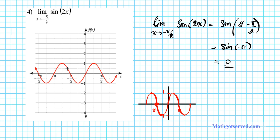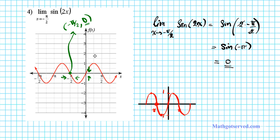Graphically, what does that mean? We're approaching negative pi over 2 from both sides, so let's find the point on the graph. The coordinates of this point are negative pi over 2 and 0. The limit as x approaches negative pi over 2 from both sides is asking: what is the y coordinate of the point you're approaching as x gets arbitrarily close to negative pi over 2? As you get really close to negative pi over 2 from both sides, you notice the y coordinate of the point you're approaching is 0, confirming our answer.